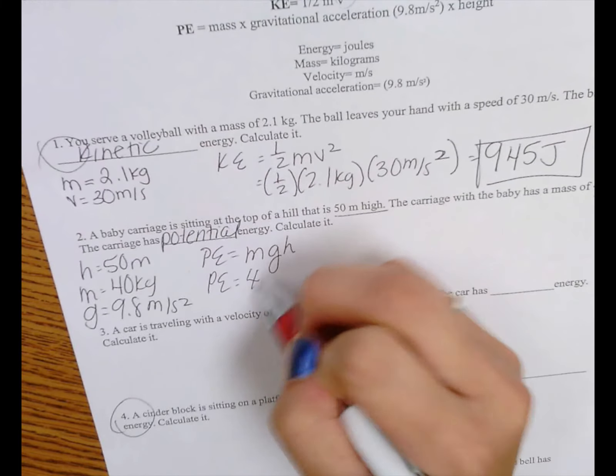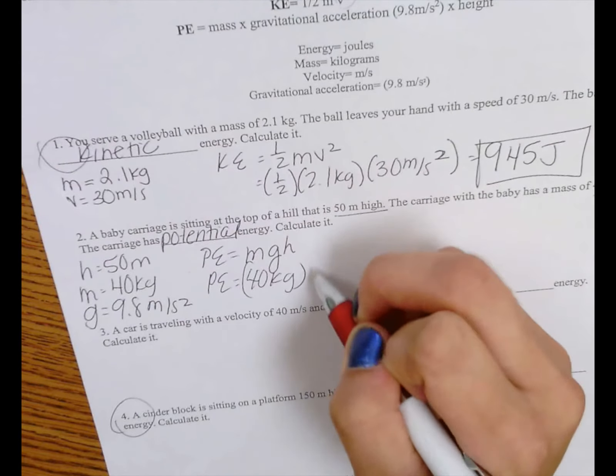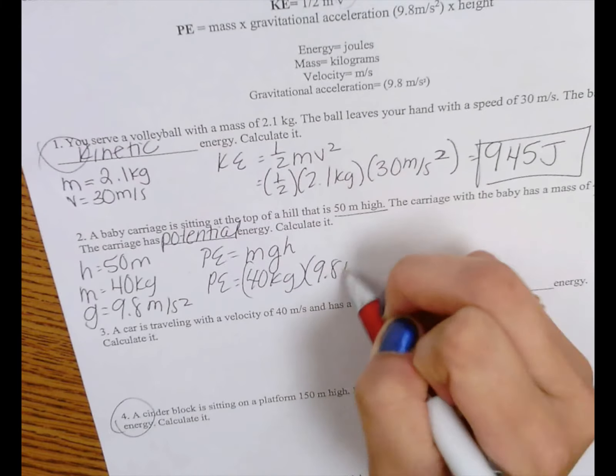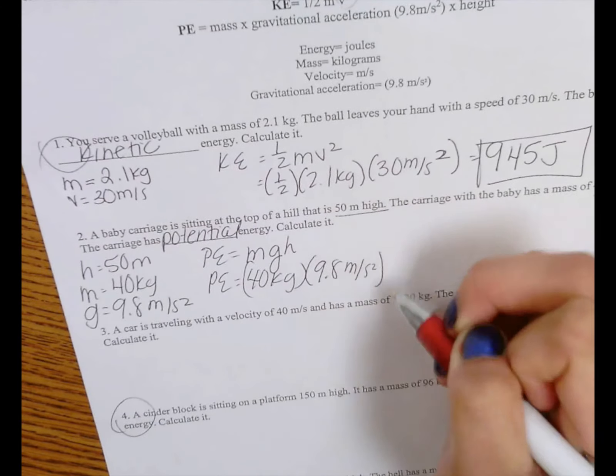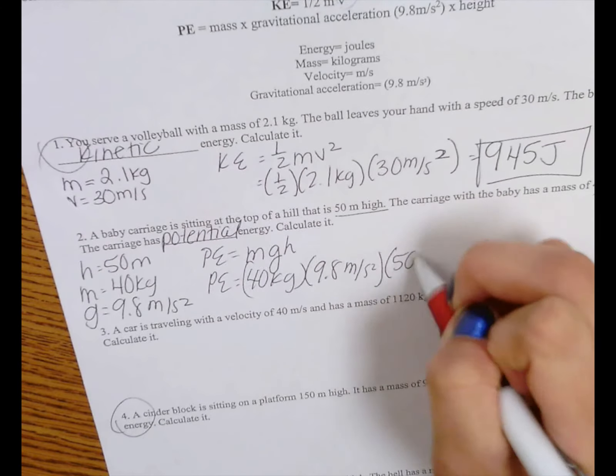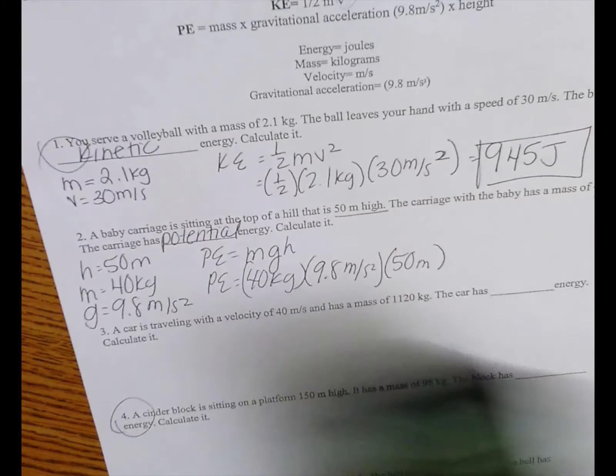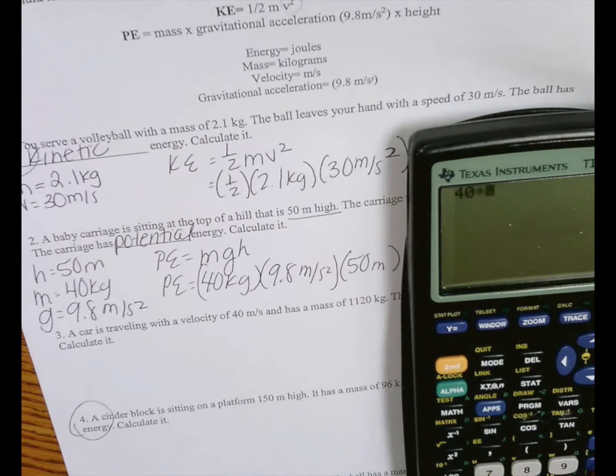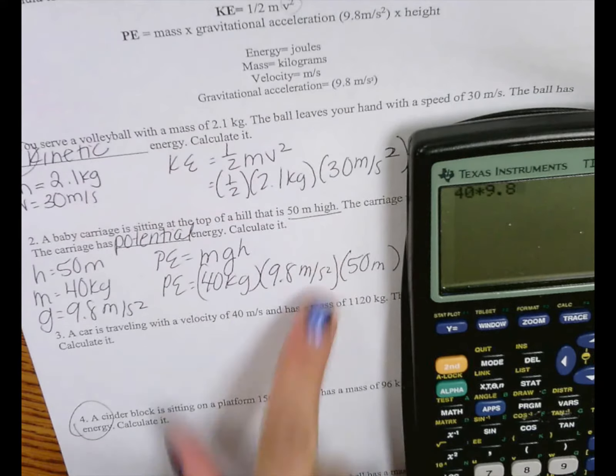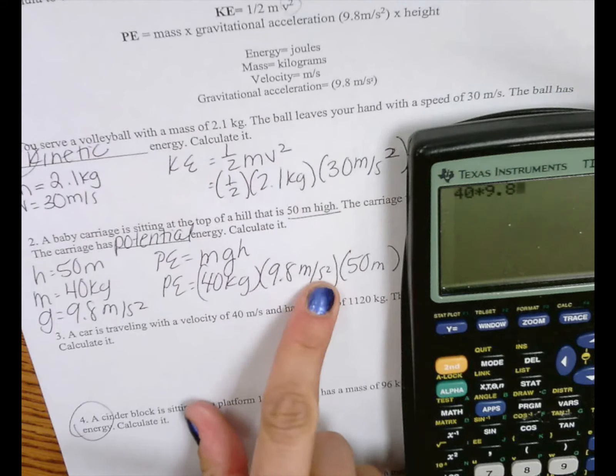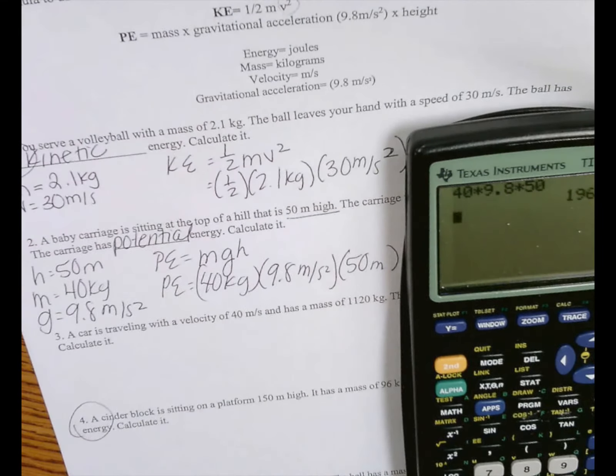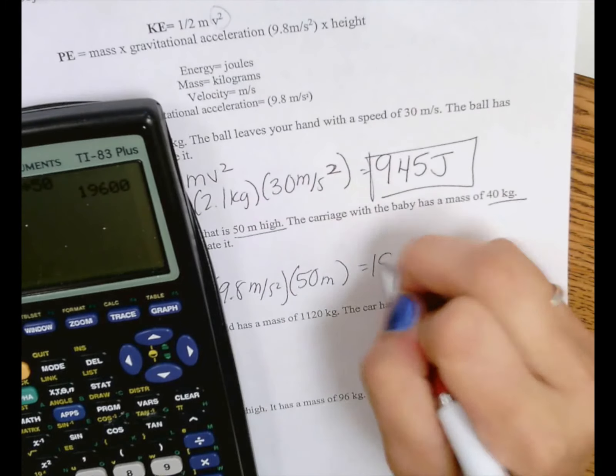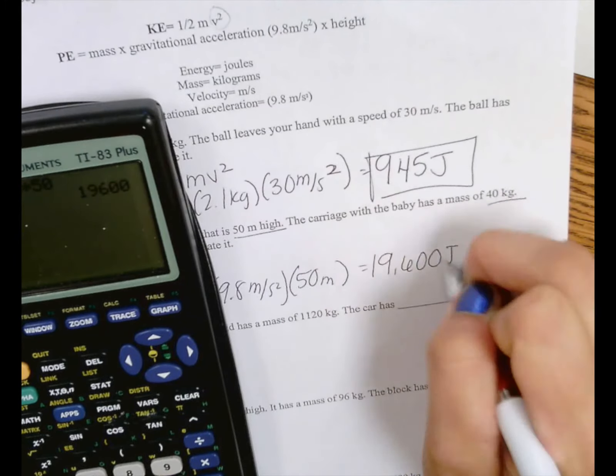The mass is 40 kilograms. The gravity, 9.8 meters per second squared. And the height is 50 meters. So all we need to do is plug this into our calculator. 40 times 9.8. Remember, you are not squaring it. That is just the units times 50.